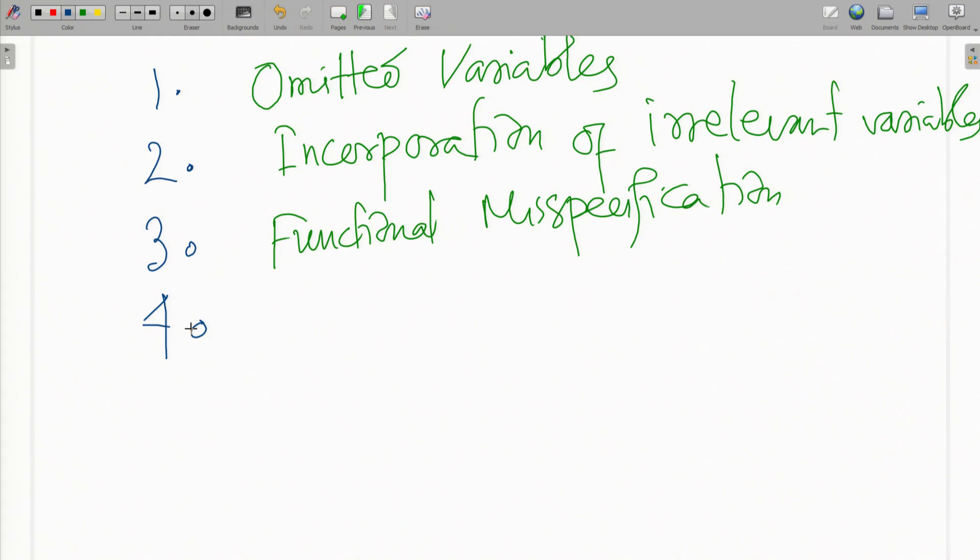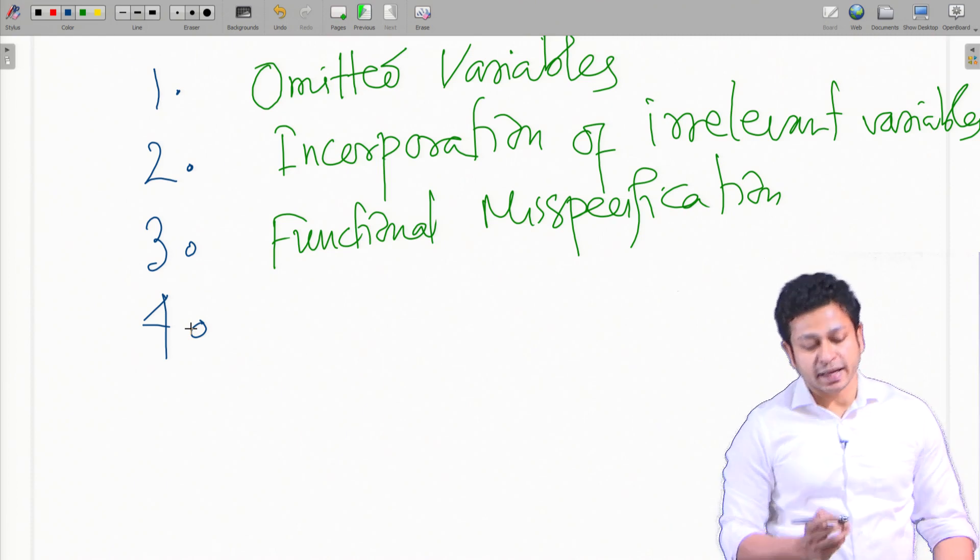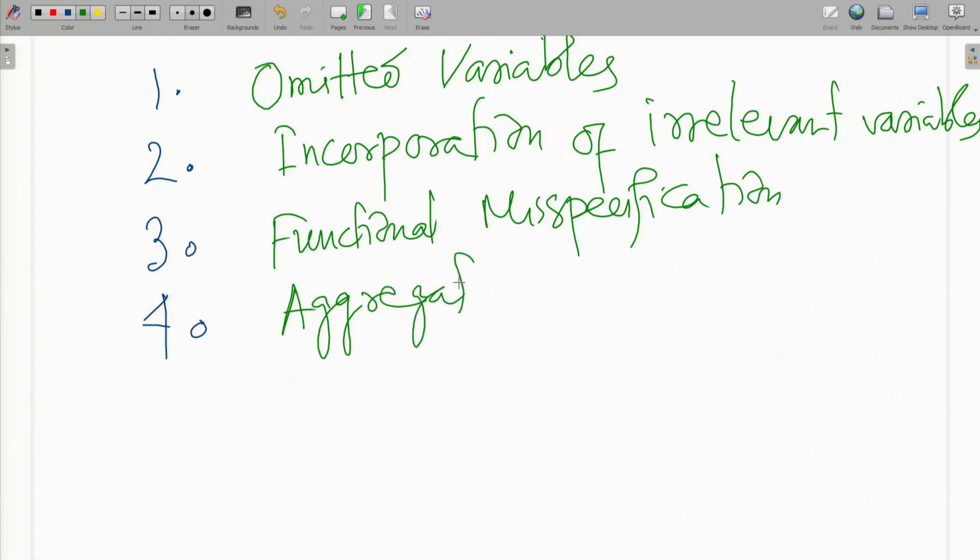The other source of error is aggregation. When we are running the regression equation, we are actually aggregating all the different individuals and they have different reasons and abilities which are influencing their earning potential. The aggregation always omits all the nitty-gritties, and because of the aggregation we end up getting some errors.